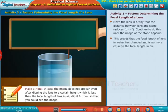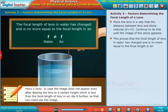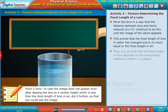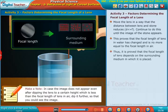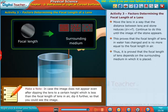This proves that the focal length of the lens in water has changed and is no more equal to the focal length in air. Thus, it is proved that the focal length of the lens depends on the surrounding medium in which it is placed.